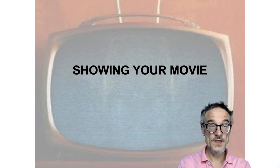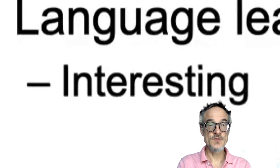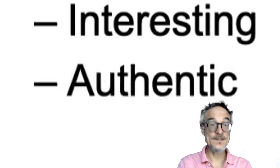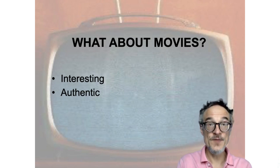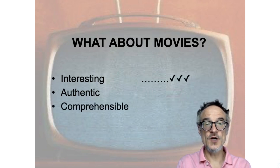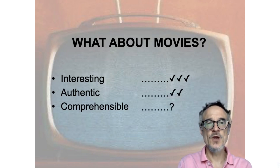I'm going to talk about showing your movie. As we talked about before, there are three conditions for teaching materials: the materials must be interesting, the materials must be authentic, and the materials must be comprehensible. Movies are definitely interesting — that's why people go to the cinema and pay for them. Movies are usually authentic; they feel real and the actors seem like real people.